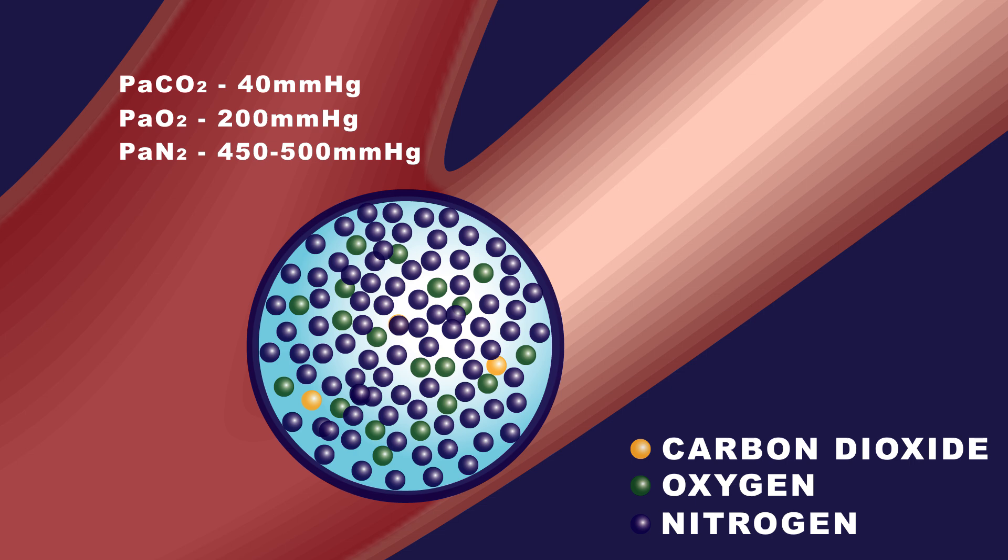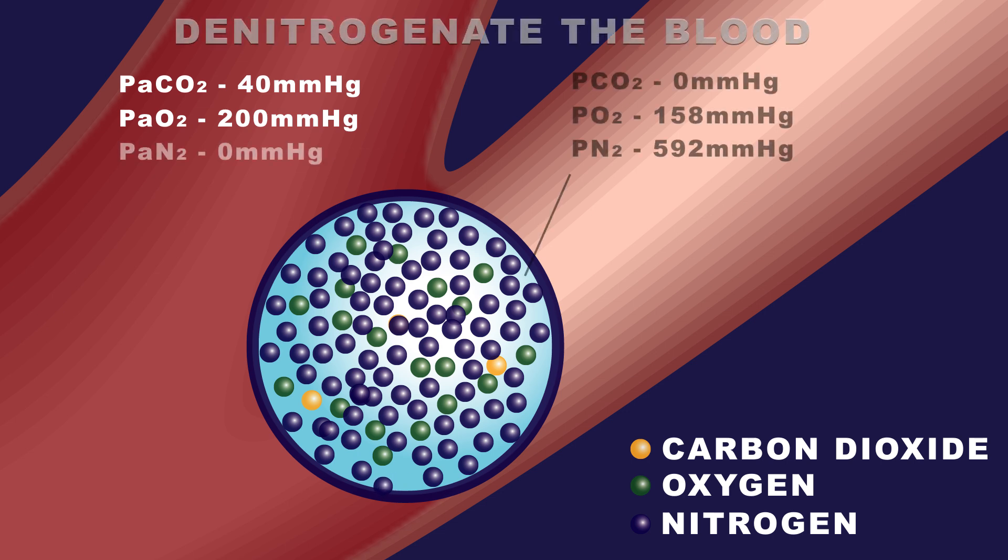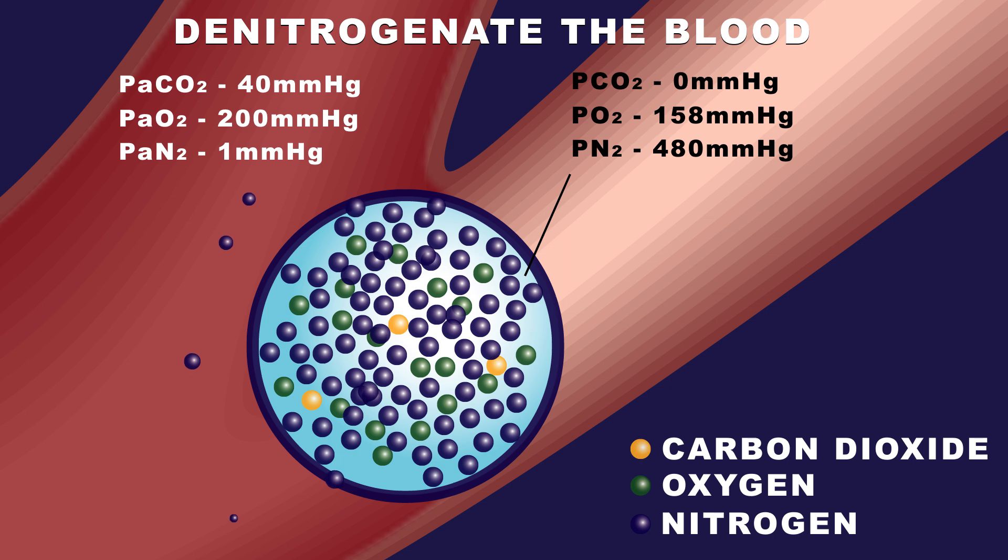By decreasing the total pressure of the dissolved nitrogen, we make room to dissolve additional nitrogen into the blood. Removing nitrogen from the blood creates a large pressure gradient, so the nitrogen in a bubble dissolves into the blood.